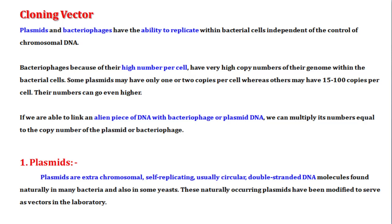The most commonly used cloning vectors are Plasmids and Bacteriophages. They can replicate in bacterial cells independent of the host chromosome. They have an origin of replication, which is a specific sequence that allows them to replicate easily.